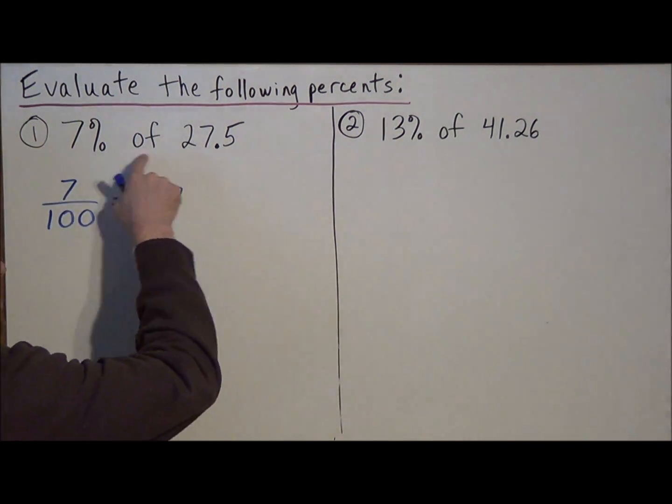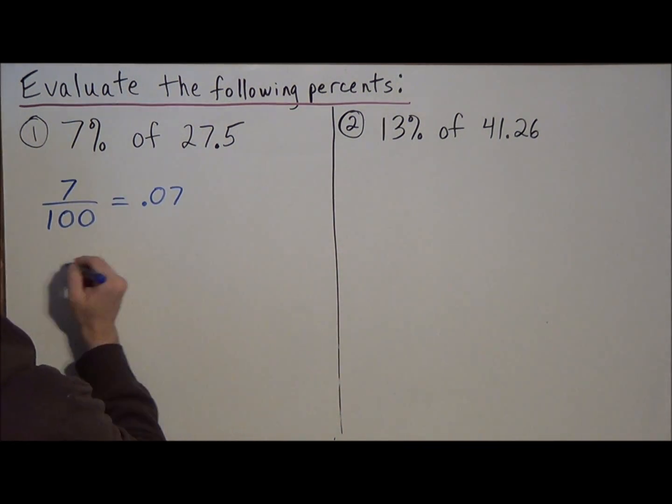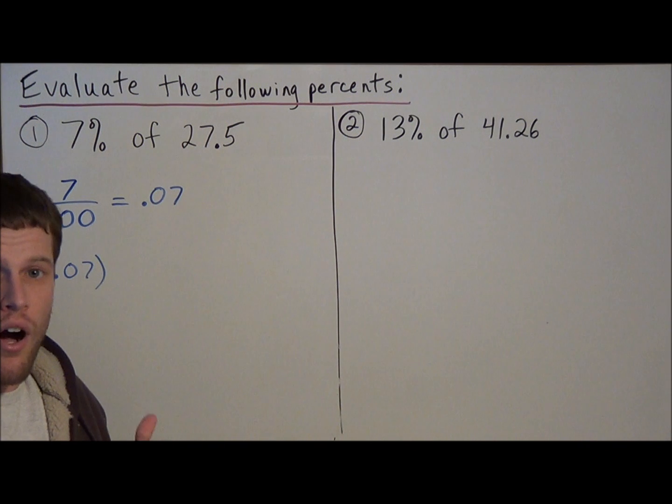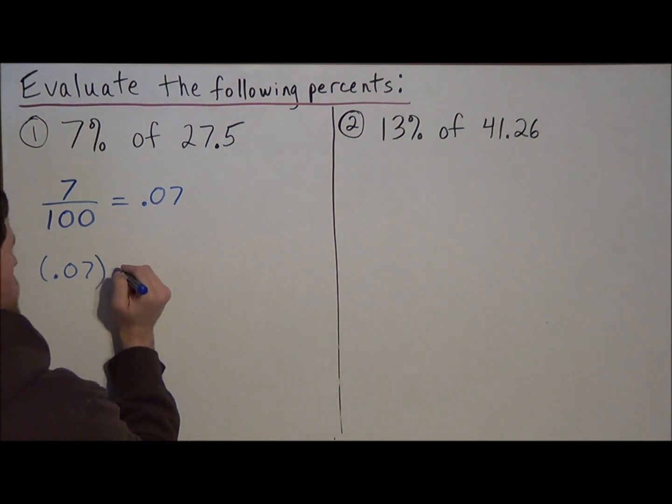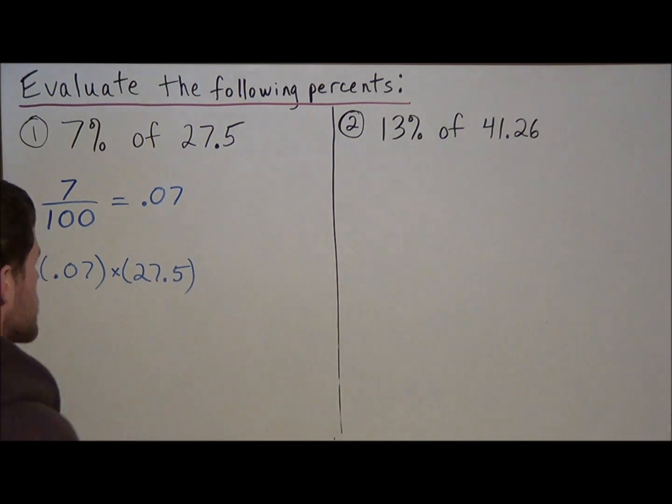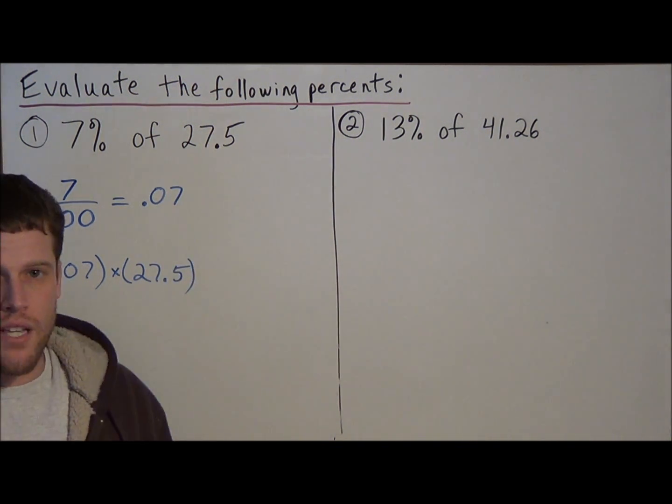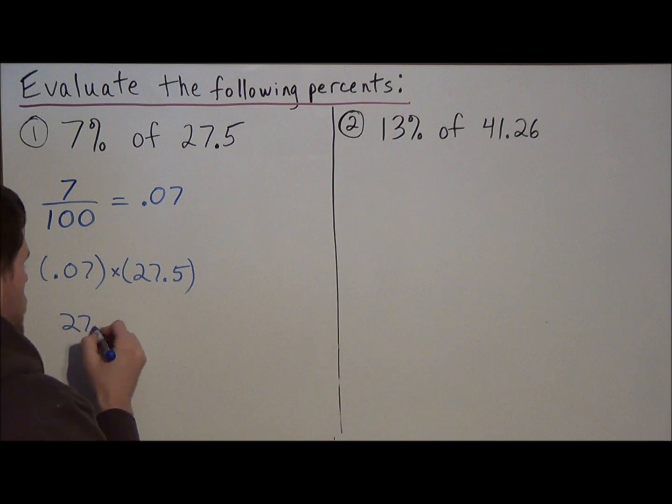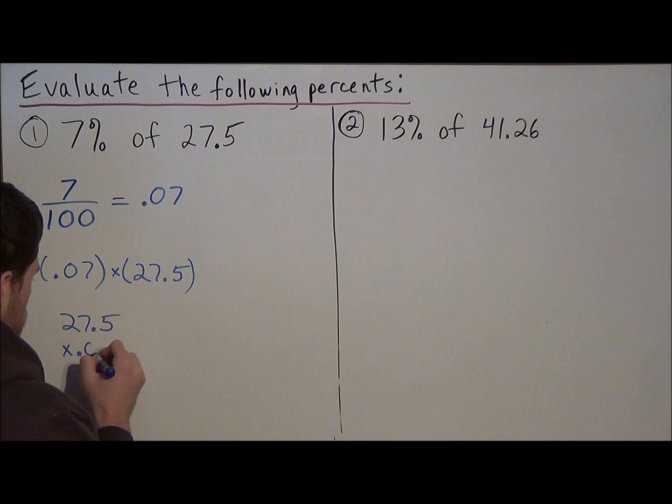But then we've got to think about what this means. 7% we're going to write as .07. We're finding 7% of, and in math, the word 'of' tells us to multiply. So we're doing .07 times 27.5. So here's the deal, once we get to this point, we want to write this as a long multiplication problem, because it's not easy to multiply horizontally. So we have 27.5 times .07.